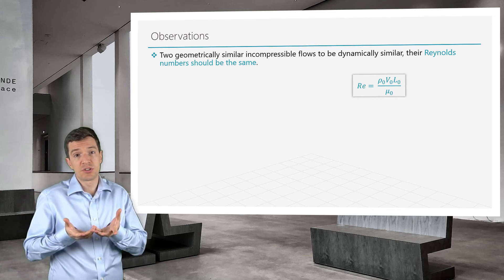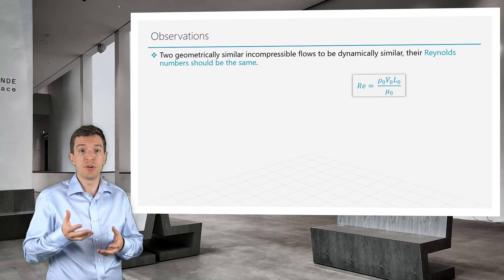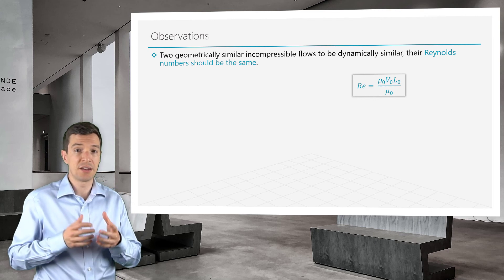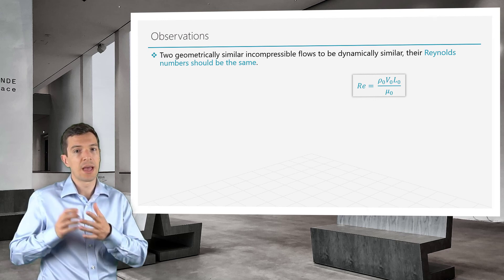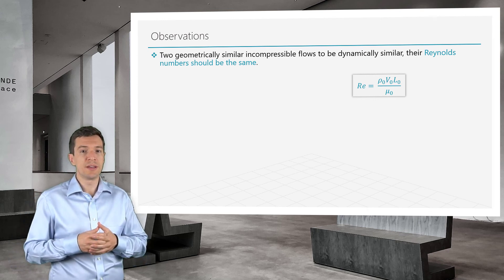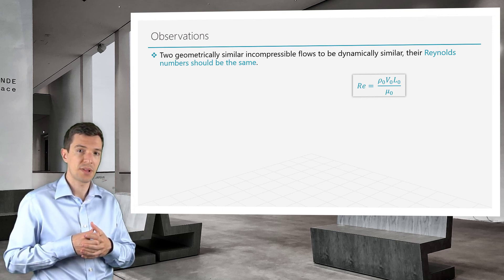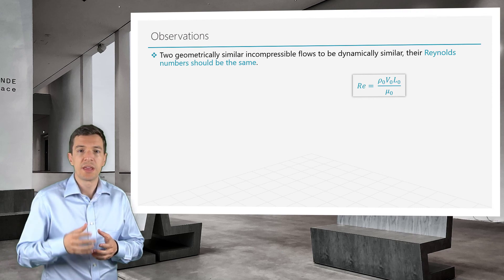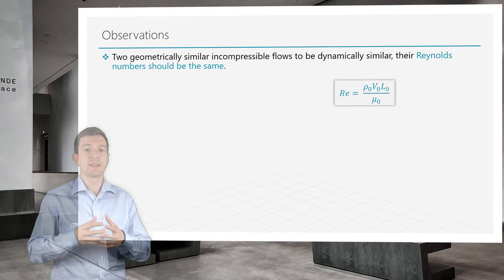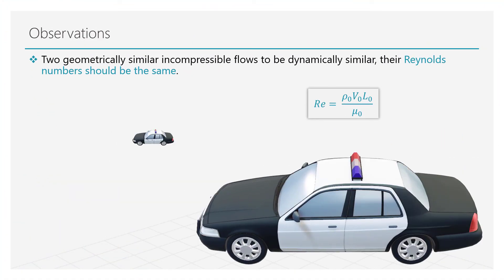One possible approach is to use a fluid with different density and viscosity. Another approach would be to change the reference velocity. For example, if we are using a 1:10 scale model of a police car in a wind tunnel, we will need to blow air at a velocity 10 times bigger than the wind velocity for the full scale case.